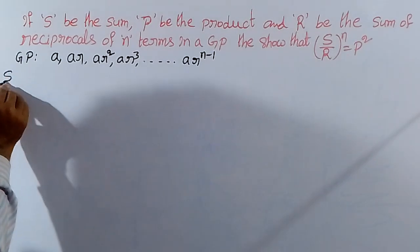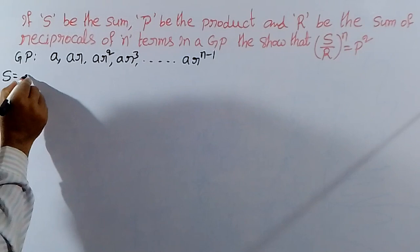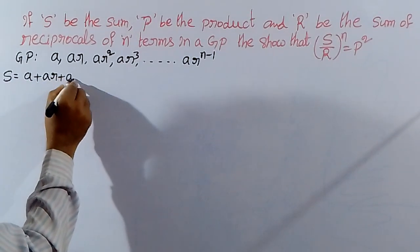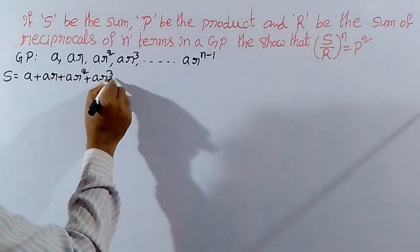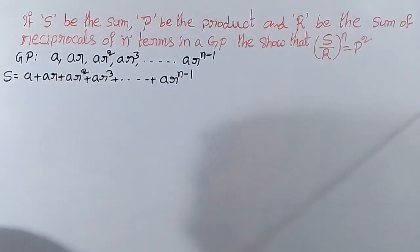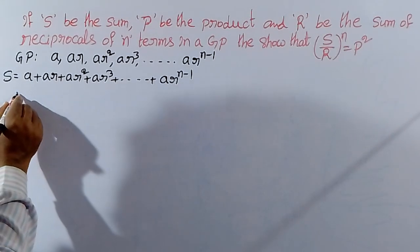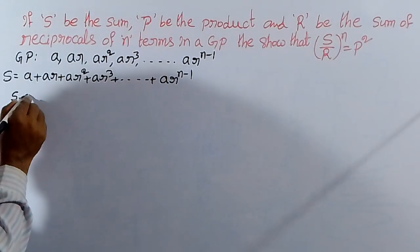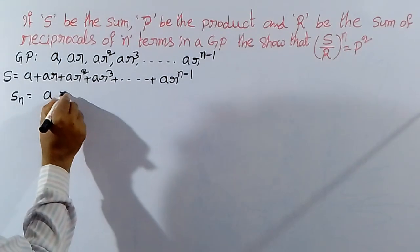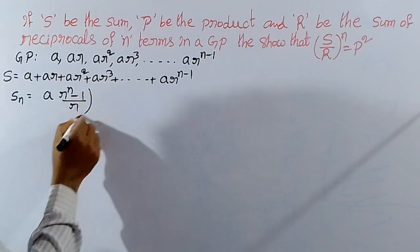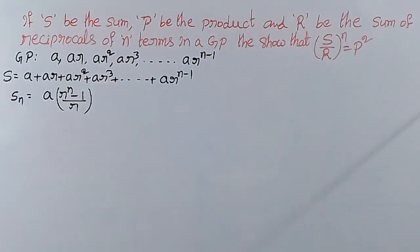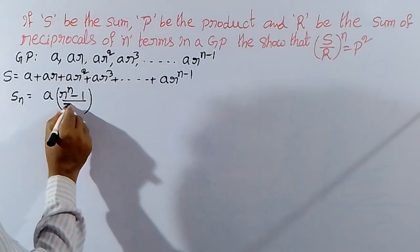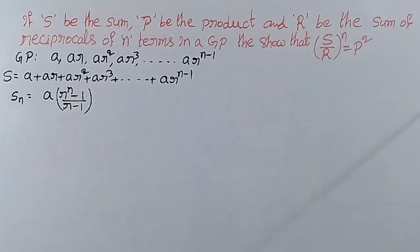Now let us find S, the sum of N terms of GP. S equals A plus AR plus AR squared plus AR cubed plus and so on up to AR power N minus 1. The formula for the sum of N terms of GP is: S_N equals A into R power N minus 1, divided by R minus 1.